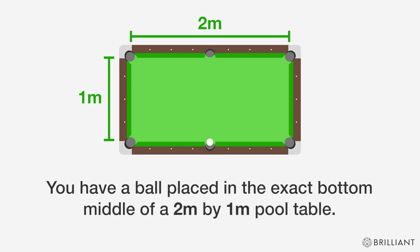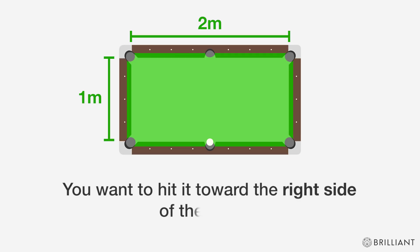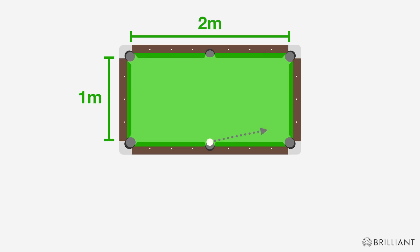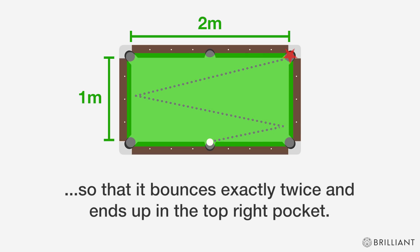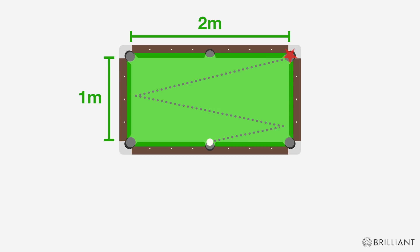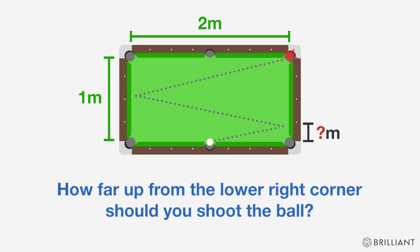You have a ball placed in the exact bottom middle of a 2 meter by 1 meter pool table. You want to hit it toward the right side of the pool table so that it bounces exactly twice and ends up in the top right pocket. How far up from the lower right corner should you shoot the ball?